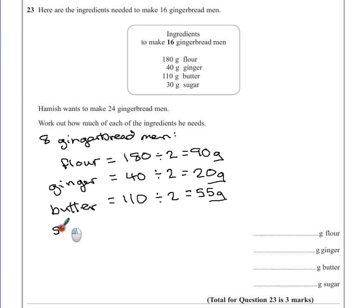And sugar, being the final ingredient, is going to be 30 divided by 2, which is 15 grams.